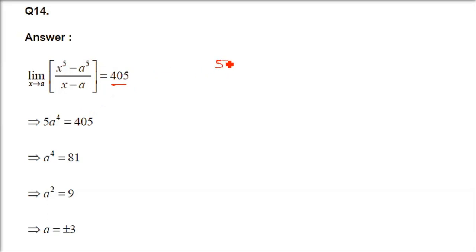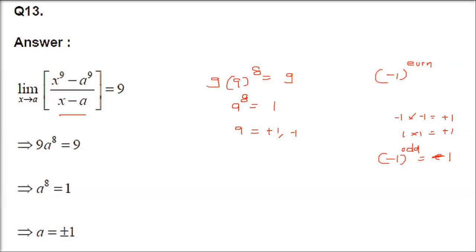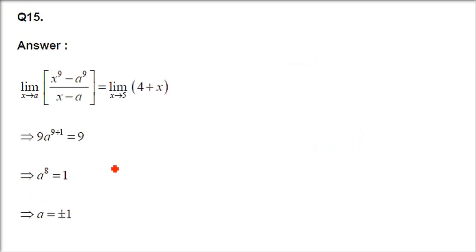Question 14: applying the formula, 5 times a to the power 4 equals 405. Dividing both sides by 5 gives a to the power 4 equals 81, which is 3 to the power 4. By the same logic — since minus 3 raised to the power 4 also equals 81 — a is going to be plus 3 and minus 3.